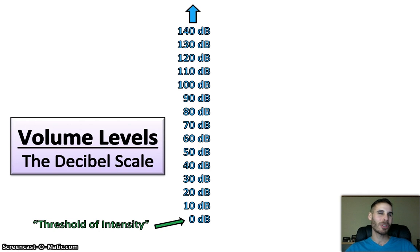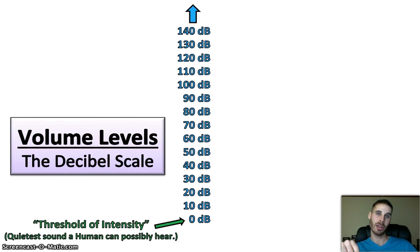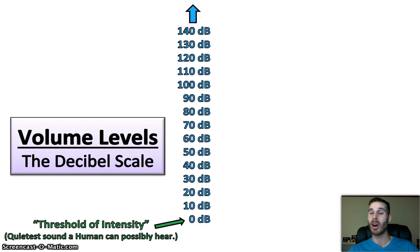So what is the threshold of intensity? Well, that's a fancy way of saying the quietest sound that a human can possibly hear. Notice that does not say the quietest sound that can be heard — it says the quietest sound a human can hear. We'll take that into account later on. So 0 decibels means not nothing, but the quietest possible sound a human can hear. It's almost so quiet that it's inaudible to a human, but there's still something there.